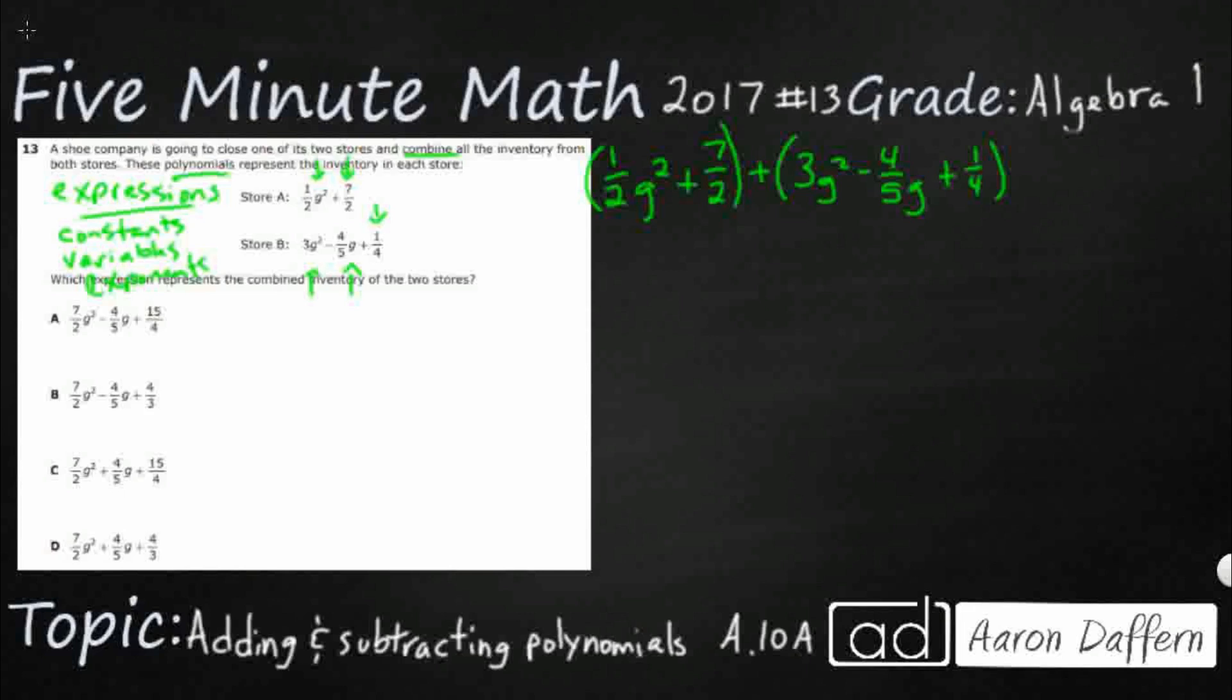Now here's the key with polynomials. Like terms. You are going to combine G squareds with G squareds. But G squareds are different than G's. And they are different than constants.